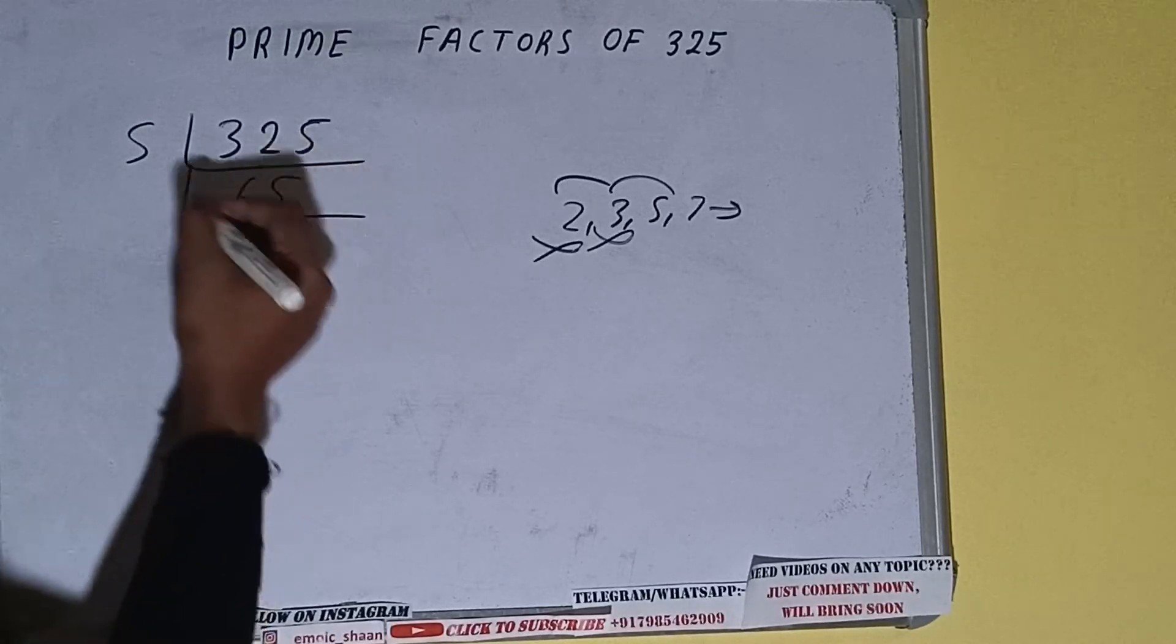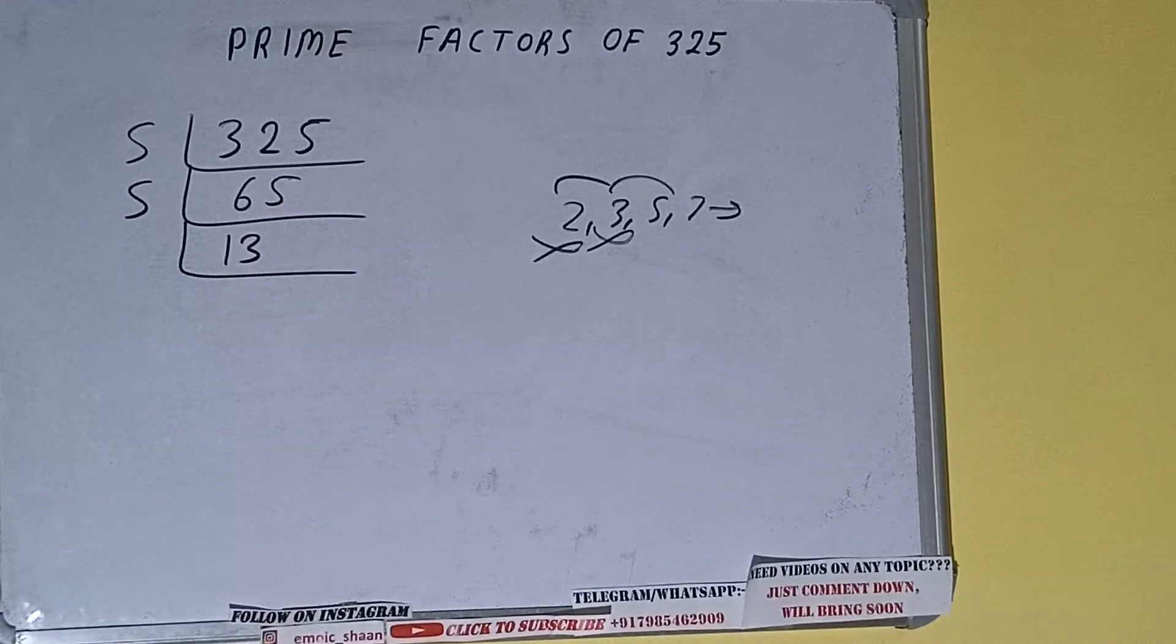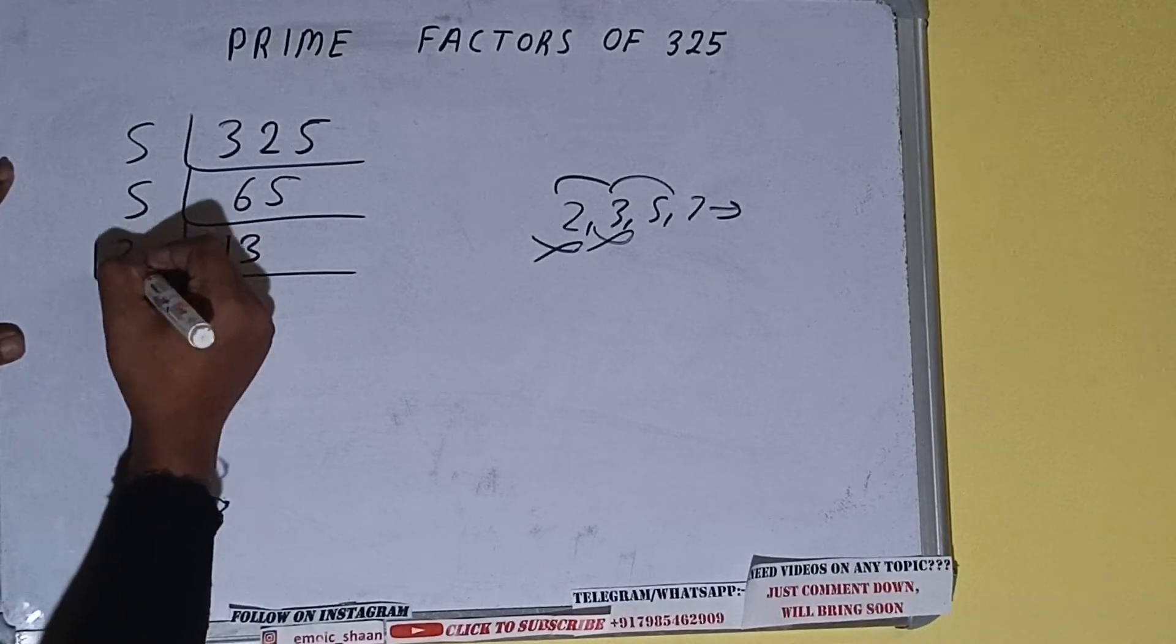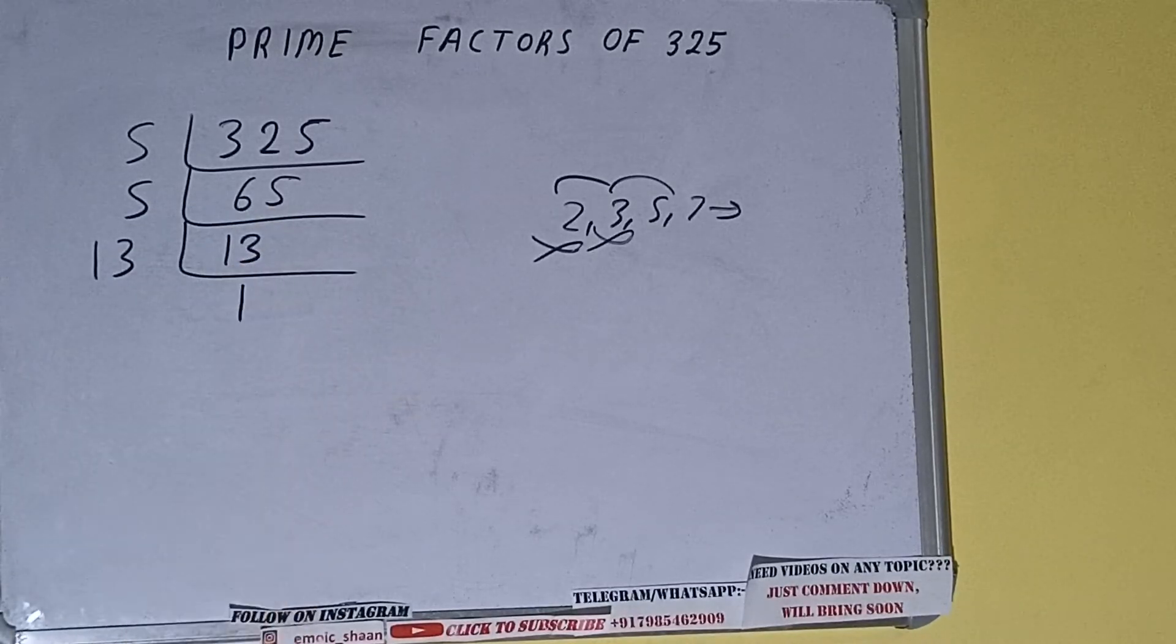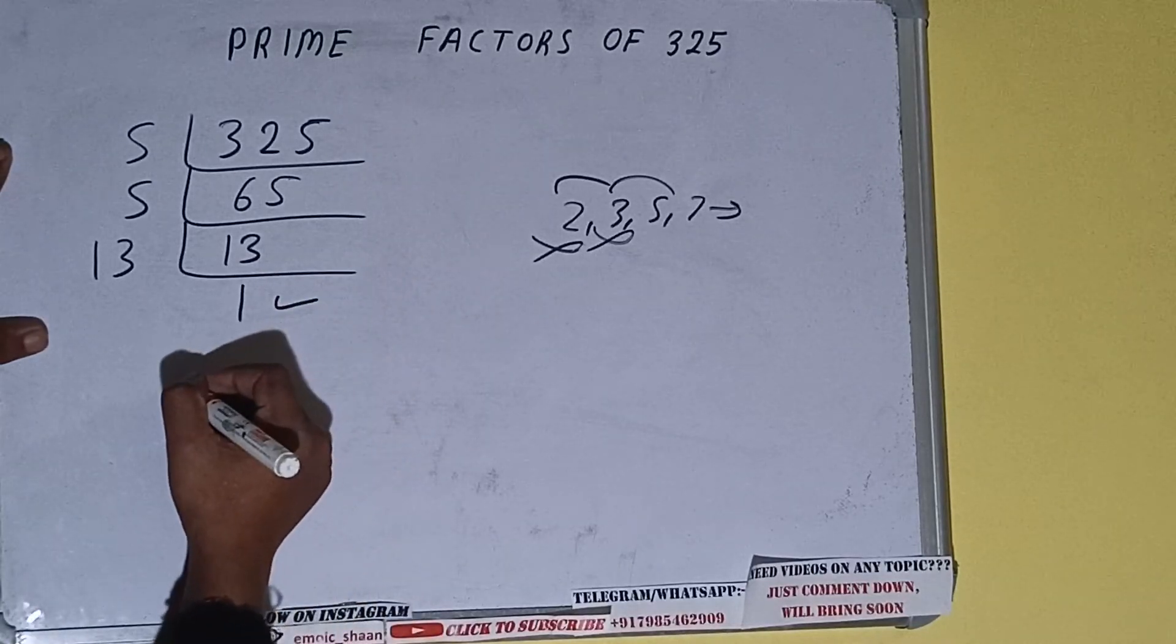13 is not divisible by 5, and 13 is also a prime number. So it is only divisible by itself, that is 13. And once we do so, we'll be getting 1. Once we get 1, we need to stop and do one last thing.